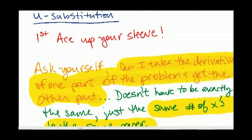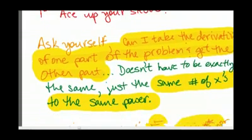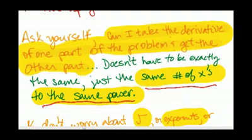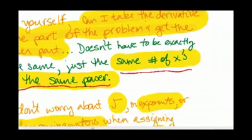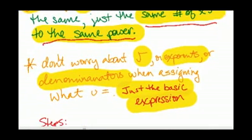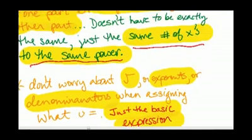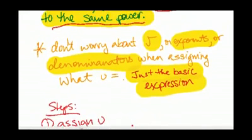U sub is kind of your first technique that you have accessible to you when the regular stuff doesn't work, algebra, trig identities. So can you take the derivative of one part and get the other part? It's a question you should be asking yourself. And all that matters is the same number of x's to the same power when you derive. I don't care about the coefficients and stuff like that. When you assign u, don't worry about square roots, exponents in the denominator or both.